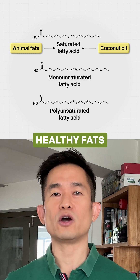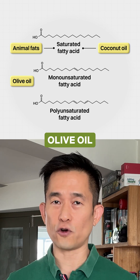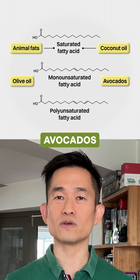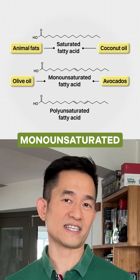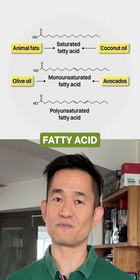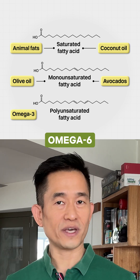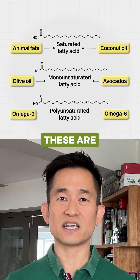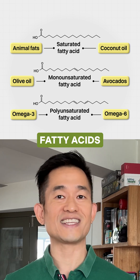Similarly, when we talk about healthy fats such as oleic acid in olive oil and avocados, that is an example of a monounsaturated fatty acid. And when we're talking about omega-3 and omega-6, these are examples of polyunsaturated fatty acids.